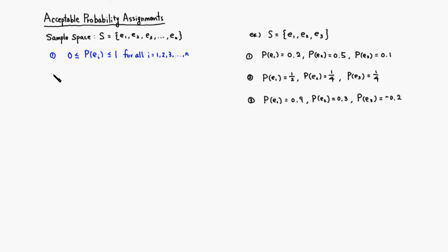So here, probability of e1, probability of e2, plus probability of e3, and you just keep on adding all the way to probability of en. The sum has to be exactly equal to one. Those are the two rules, and as long as you follow those two rules, you can assign any number to each probability.